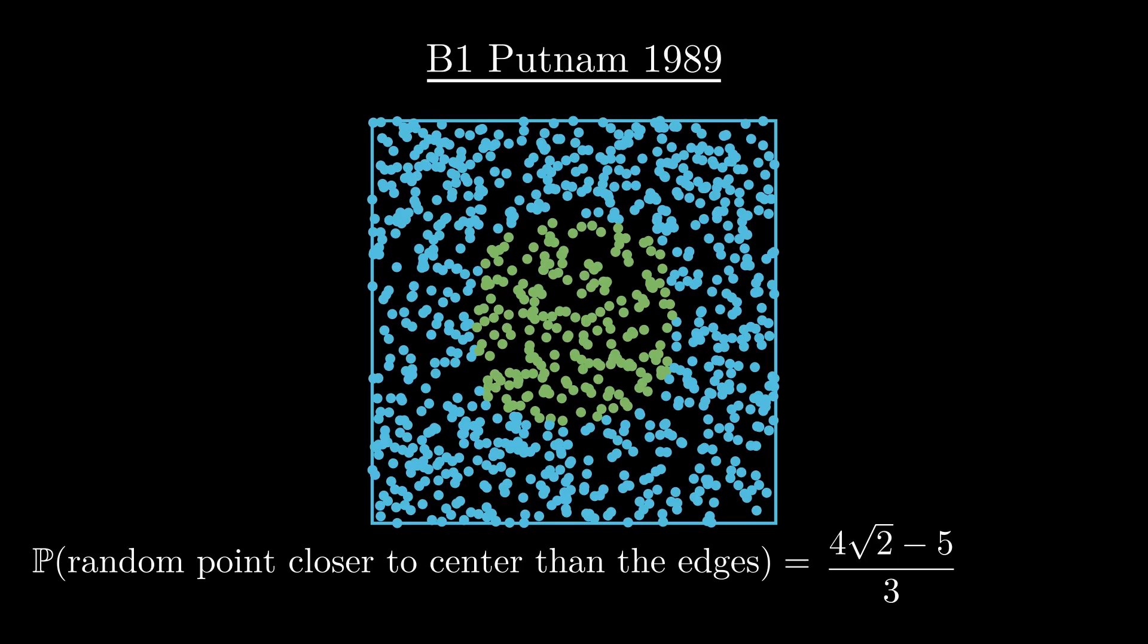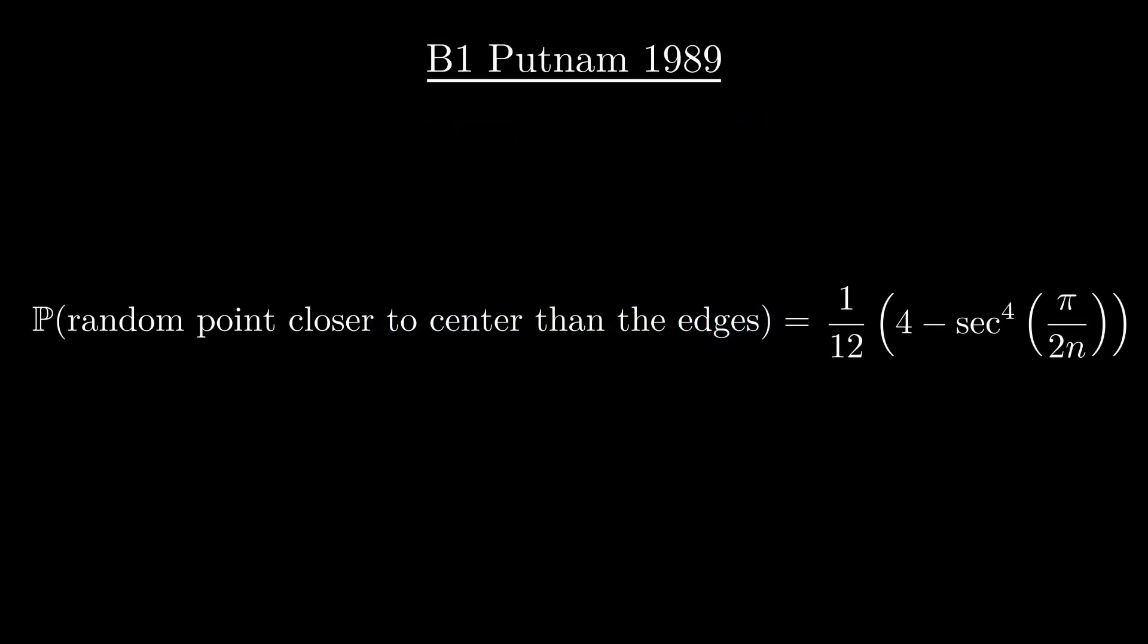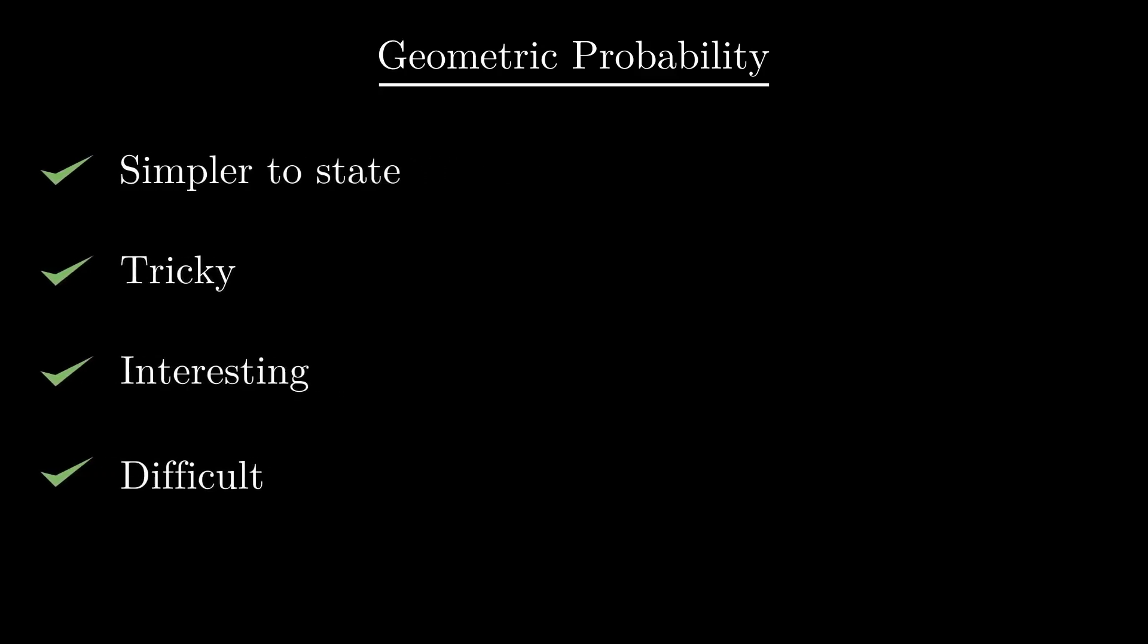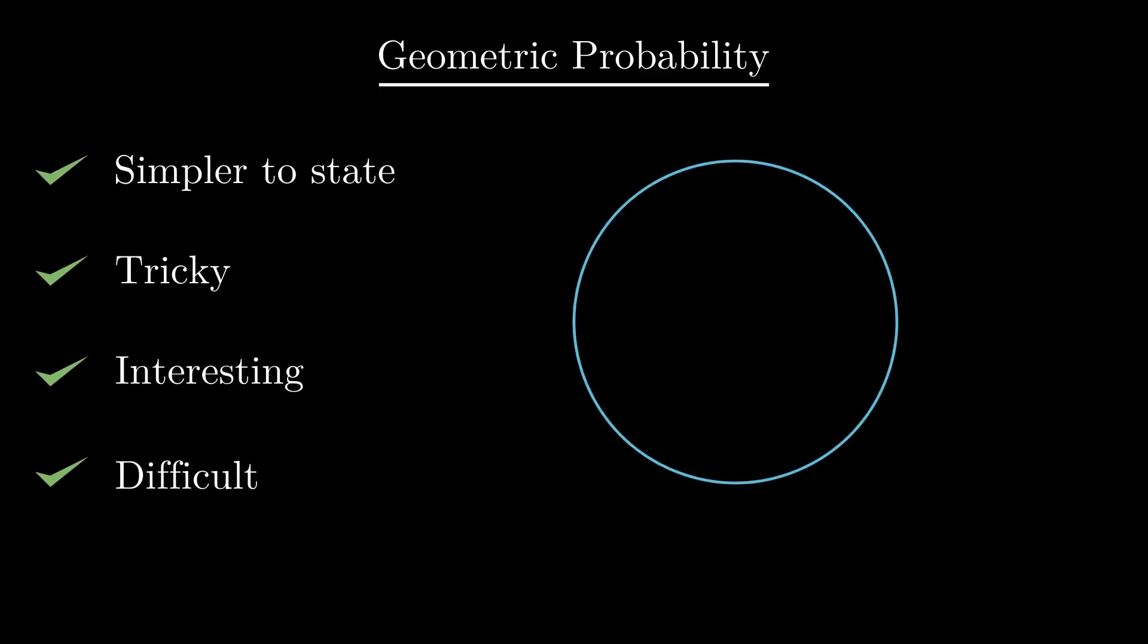In fact, we can generalize to the case of n-gons and show that the required probability is 1/12 of 4 minus secant to the power 4 of pi by 2n. Problems in geometric probability are usually very difficult and/or tricky even when the questions are simpler to state.